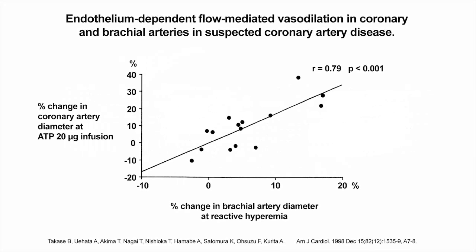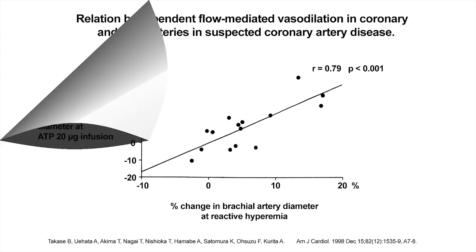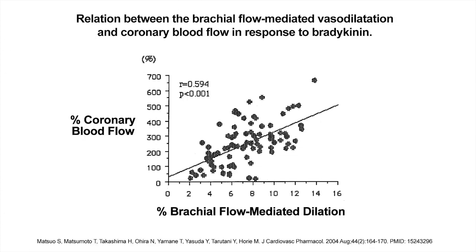As shown in these two studies, the percentage of increase in the diameter of the epicardial coronary arteries, as well as the percentage of increase in blood flow due to microvascular coronary endothelial function, correlated well with those in the brachial arteries in the arm.